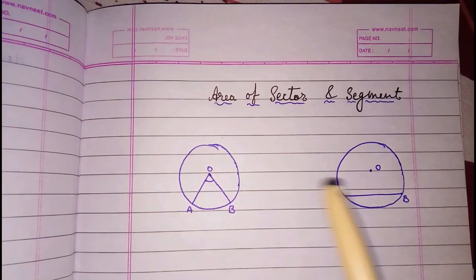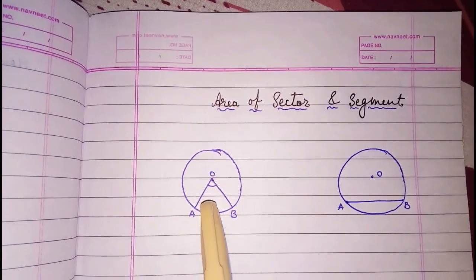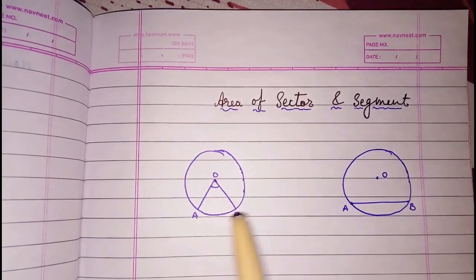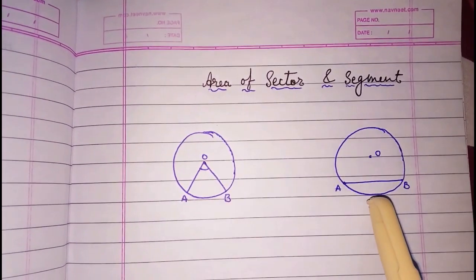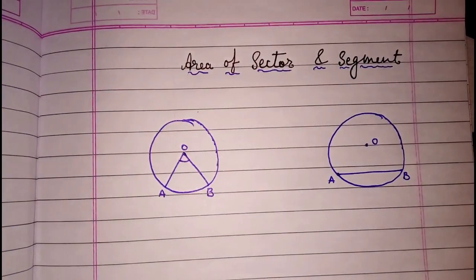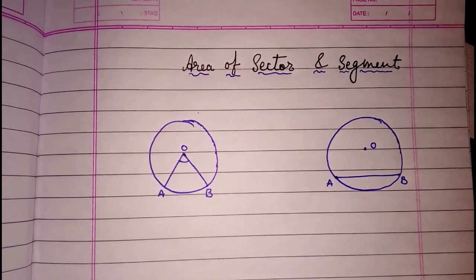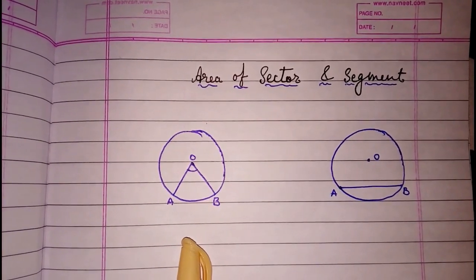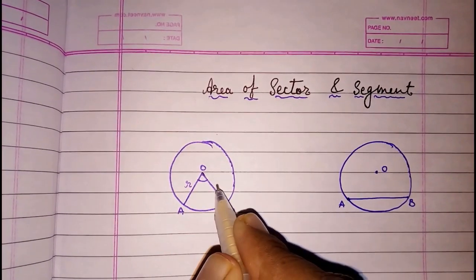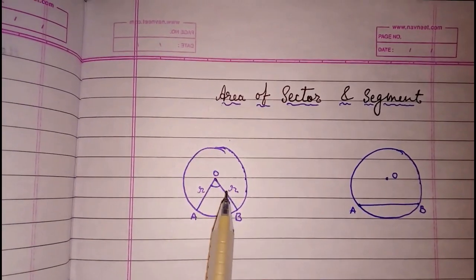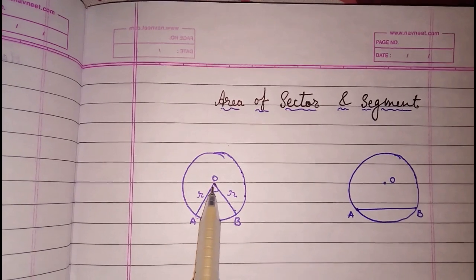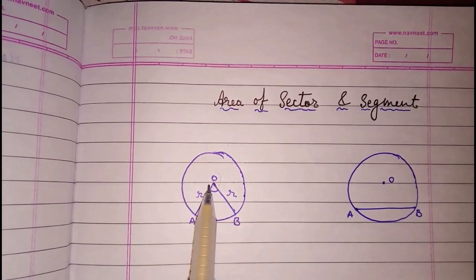So first we should know that this is a sector. A pizza which we cut is in the form of a sector, and if we want to break a biscuit, it is in the form of a segment. We know these are the two radii, and this is the smaller part of the circle and this is the bigger part of the circle.